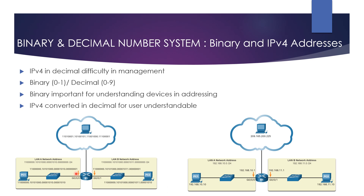However, it is very challenging for humans to work with binary, so for easy understanding and use by people, IPv4 addresses are expressed in dotted decimal notation. In the next figure, PC1's IP address that was shown in binary is now shown as a decimal number, and the gateway for Router 1 at interface G0/0/0 is also converted from binary to decimal. For a solid understanding of network addressing, it is necessary to know binary addressing and gain practical skills in converting between binary and dotted decimal IPv4 addresses.